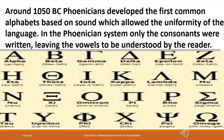What gave human communication a powerful scope and depth was the development of language. As humans became more and more organized, different kinds of languages and communication methods were developed. Around 1050 BC, Phoenicians developed the first common alphabets based on sounds, which allowed the uniformity of the language. In the Phoenician system, only the consonants were written, leaving the vowels to be understood by the reader. The first two letters in the Phoenician system were alpha and beta, which were later borrowed and adapted by the Greeks.